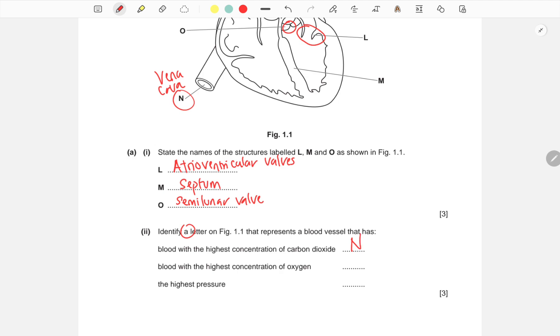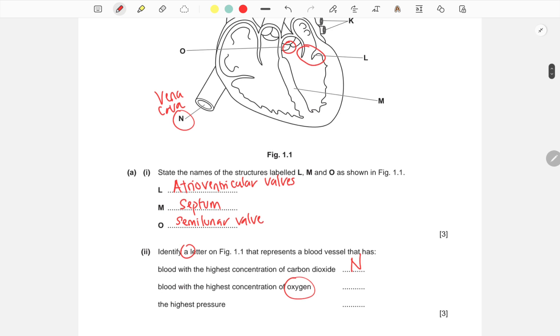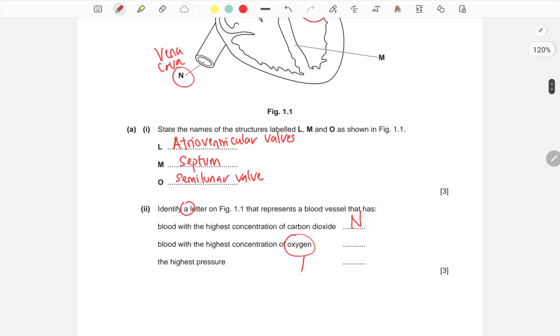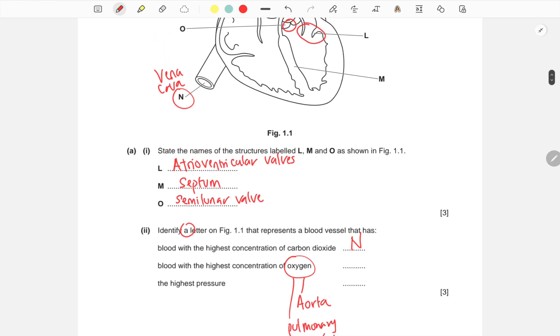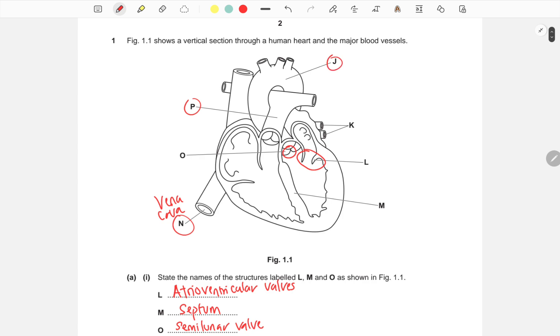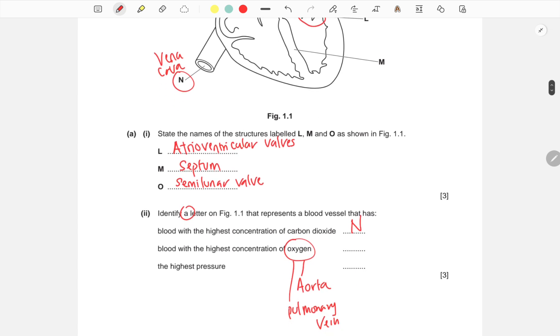The blood vessel containing blood with the highest concentration of oxygen will be either the aorta or the pulmonary vein, because the pulmonary vein has the blood which has been freshly oxygenated by the lungs that goes back to the heart. We just have to identify a letter in the diagram. The aorta is J, and the pulmonary vein is K. So you could put either J or K as your answer.